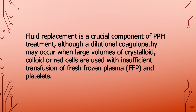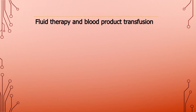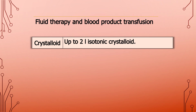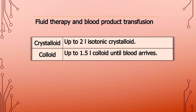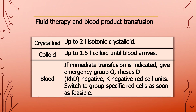Fluid replacement is a crucial component of postpartum hemorrhage treatment, although dilutional coagulopathy may occur when large volumes of crystalloid, colloid, or red cells are used with insufficient transfusion of fresh frozen plasma and platelets. Fluid therapy and blood product transfusion: crystalloid up to 2 liters isotonic crystalloid; colloid up to 1.5 liters until blood arrives; blood — if immediate transfusion is indicated, give emergency group O, RhD negative, K negative red cell units, then switch to group-specific red cells as soon as available.